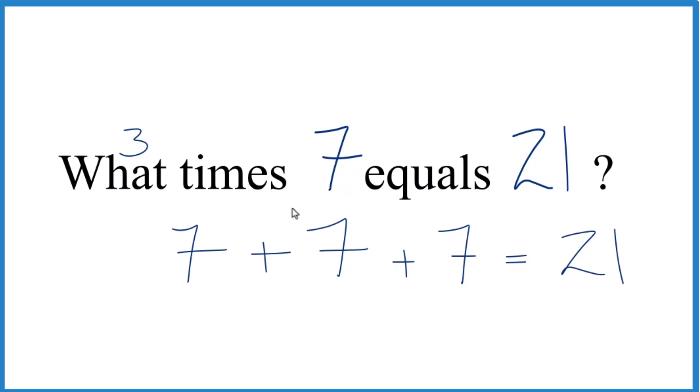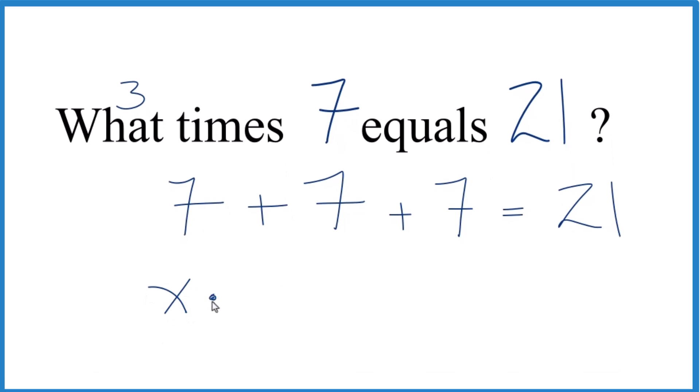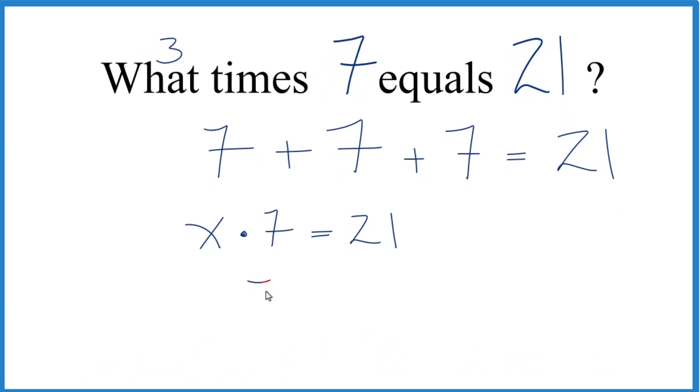The other way you could do this is you could say what number, and we don't know the number, we're going to call it x, times 7. So we have our multiplication symbol equals 21. And x times 7, let's just call that 7x equals 21.